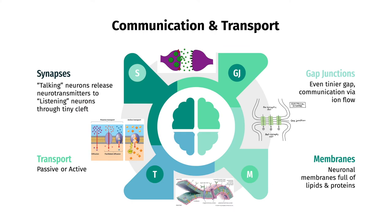Neurons communicate at synapses, where the presynaptic talking neuron releases chemicals called neurotransmitters from its presynaptic axon terminal into the synaptic cleft, the 10-15 nanometer gap between the presynaptic and postsynaptic membranes, and these neurotransmitters then bind to receptors on postsynaptic listening neurons. Neurons can also communicate via gap junctions, which are even tinier spaces through which ions can flow, a much faster form of communication.